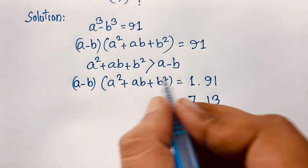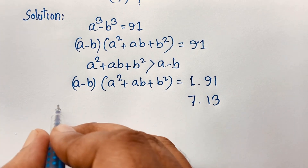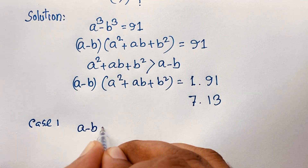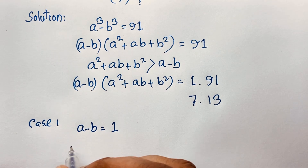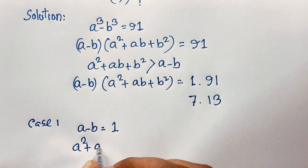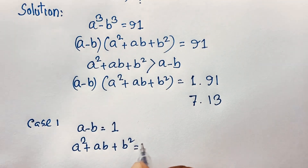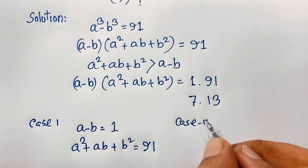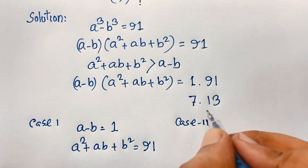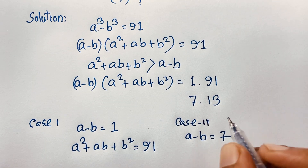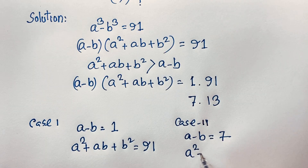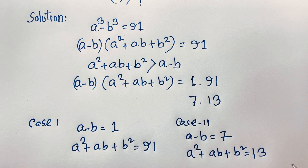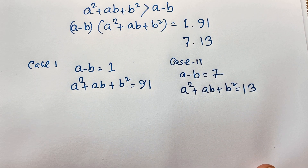So we have two cases. Case 1: a minus b equals 1 and a² plus ab plus b² equals 91. Case 2: a minus b equals 7 and a² plus ab plus b² equals 13.